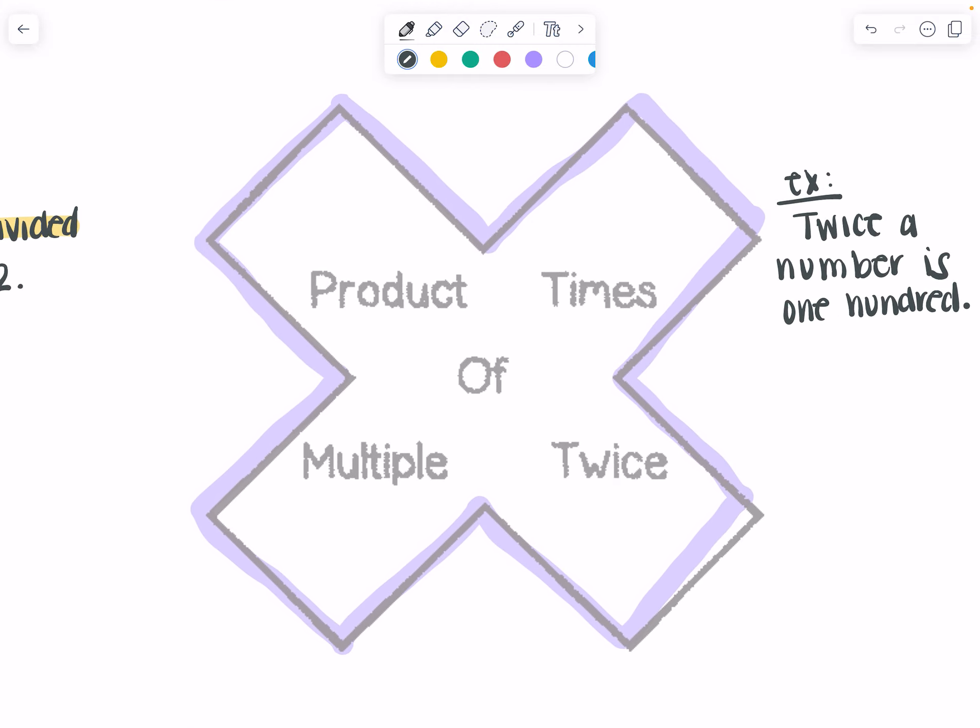Okay, twice a number is 100. Twice, times, product of, multiple. Another one we can add in here is tripled. That means three times. Quadrupled four times. Twice is definitely going to be the most common one you see though. So twice a number is 100. Twice a number is going to mean two times the number x is 100. And I can write this as just 2x equals 100.